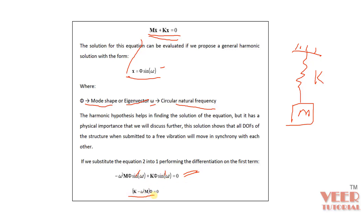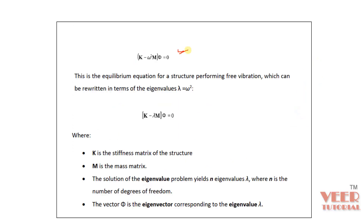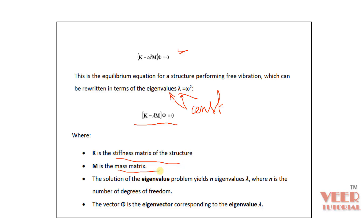When we cancel out sin(omega t), we get an equation with a constant omega squared. We write lambda equal to omega squared, so lambda is called the eigenvalue. We can write the equation in the form: (k minus lambda m) times phi equals zero. This is the equation the software solves — k is the stiffness matrix and m is the mass matrix — for n eigenvalues, where n is specified by the user.